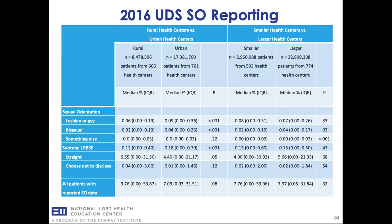When we looked at 2017 data, we actually saw a drop in missingness — people are getting better and better at this. We're also seeing numbers go up in terms of people identifying as LGB or something else. We saw a similar trend in gender identity data for 2017, where the number of missing dropped off and the number of people reporting as transgender and non-binary also increased. The number of health centers providing data for 2017 also increased.